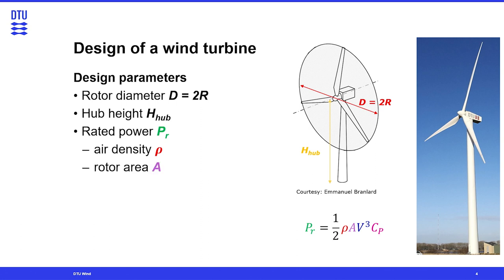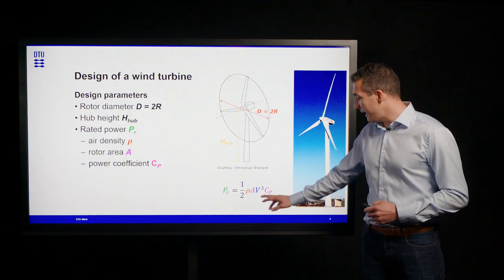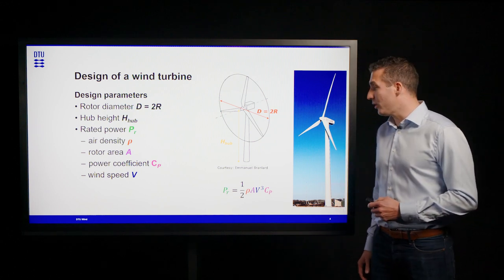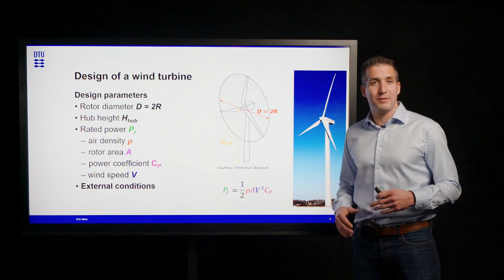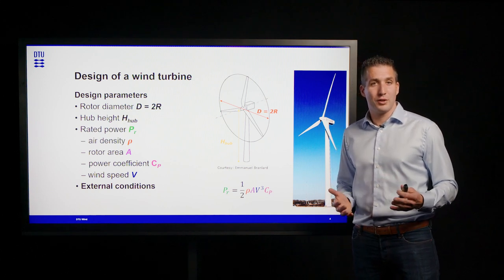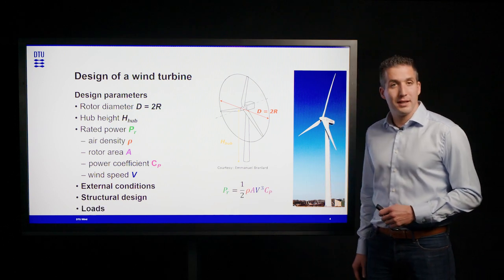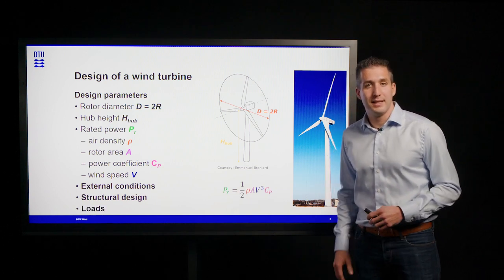Then we have our rotor area as a result of our diameter, and of course we have to know how efficiently we can extract power from the wind, so we have a power coefficient that goes into our equation as well. We also have our wind speed, which is an external condition, meaning we have to know more about our external conditions to come up with a good structural design and know the loads our design will experience.